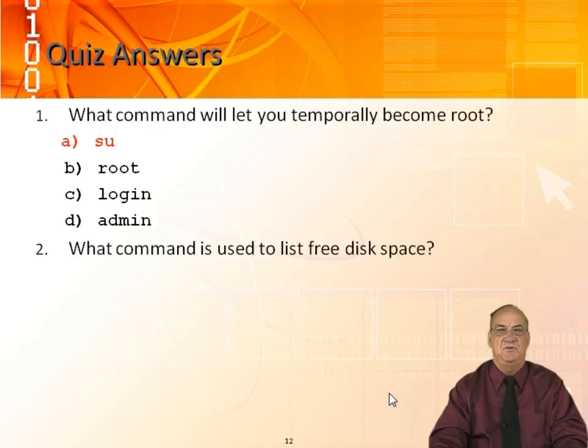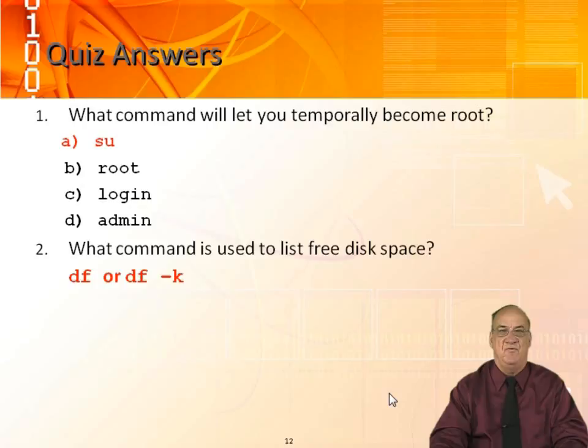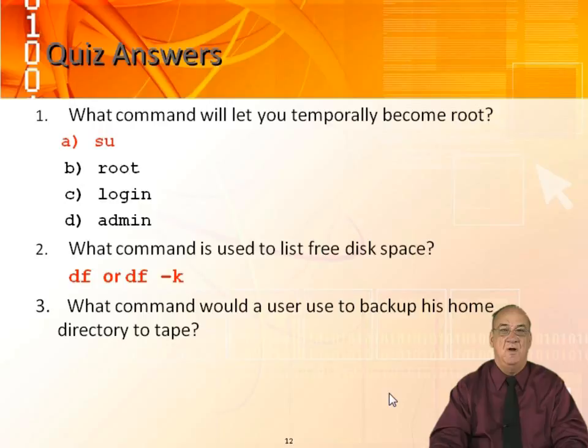What command is used to list free disk space? DF or DF minus K. In some Unixes there are even more options, but DF stands for disk free. There's also DU for disk used. What command would a user use to back up his home directory to tape? TAR — it stands for Tape Archive and Retrieval — so anyone can use TAR.